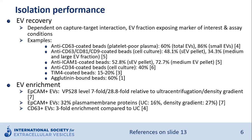In some studies, EV enrichment was also experimentally tested. When using EPCAM-positive EVs, the authors found an enrichment of VPS28 — an EV marker — about 7-fold compared to ultracentrifugation, and almost 30-fold compared to density gradient. When these EVs were proteomically characterized, about 30% of the proteins belonged to the category of plasma membrane proteins, compared to only 16% with ultracentrifugation. With anti-CD63 coated beads in platelet-poor plasma, there was a 3-fold enrichment compared to ultracentrifugation, calculated from protein amounts and EV counts.